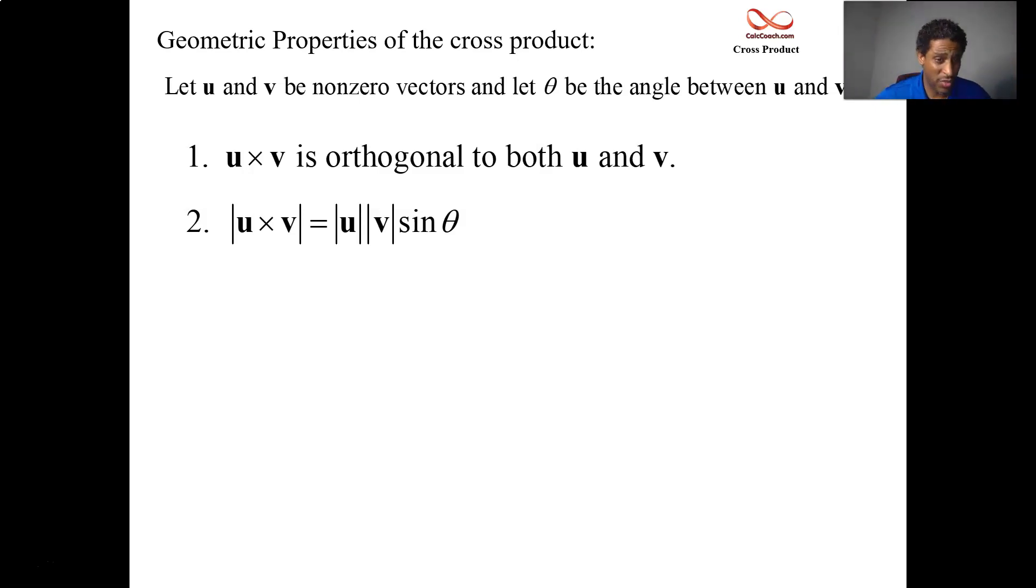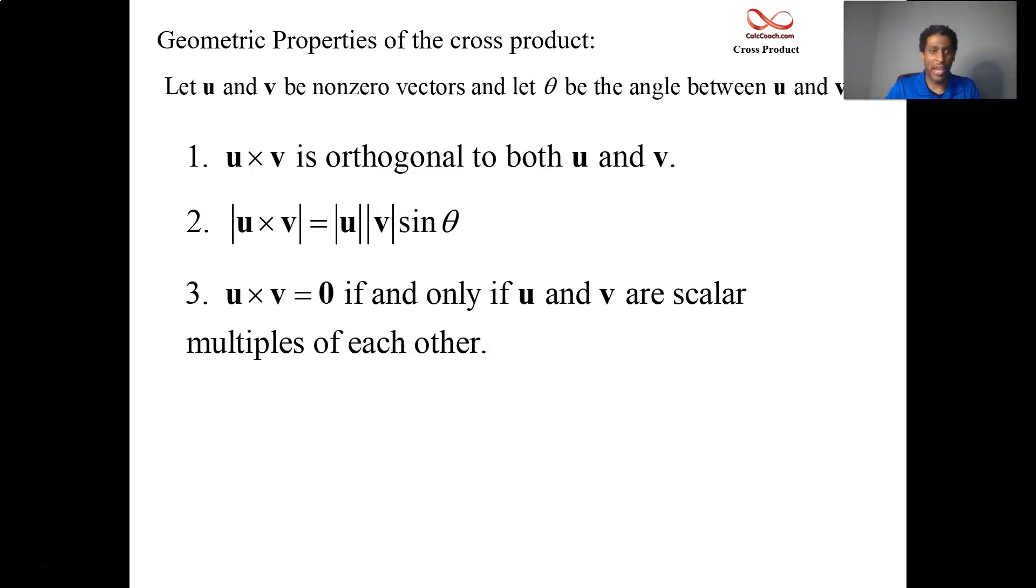If you ever cross two vectors and get the zero vector, that's going to be the case if and only if those two vectors are scalar multiples of each other, meaning that if you have the vector V, then the vector U is some constant times V, like 7V, or maybe even negative 11V, pointing in the opposite direction. That's still one guy written as a scalar multiple of the other guy. You'll always get the cross product to be zero in that case.